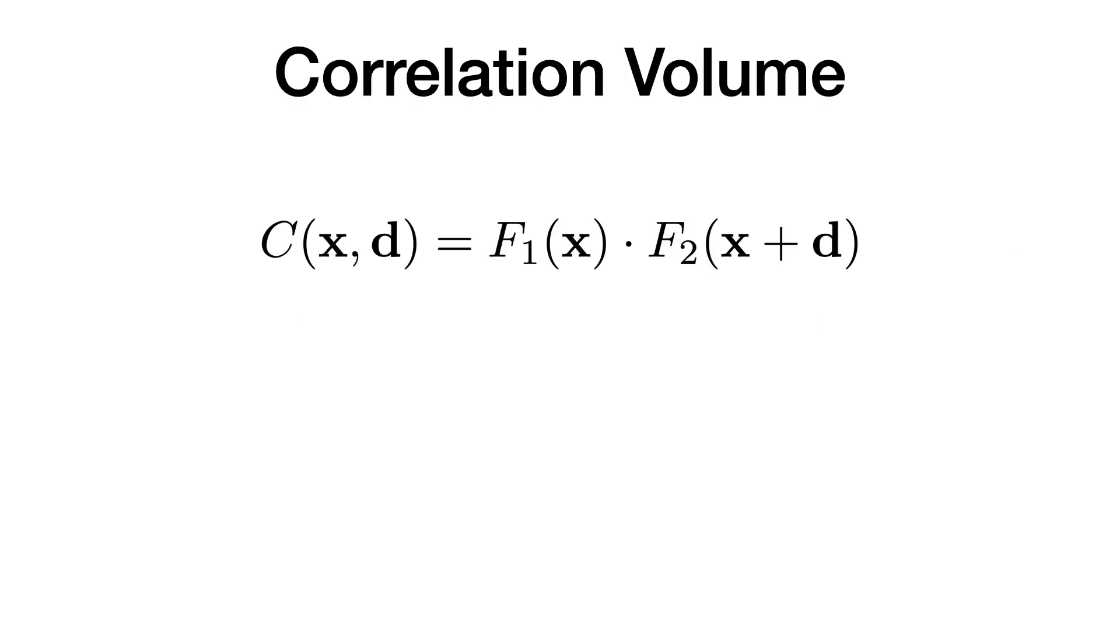Let F1 and F2 denote two feature maps extracted from the first and second image. For given pixel location x and the displacement vector d, a correlation is represented as the dot product between the feature vector at x in F1 and the feature vector at x plus d in F2. The correlation volume is a set of such correlations.